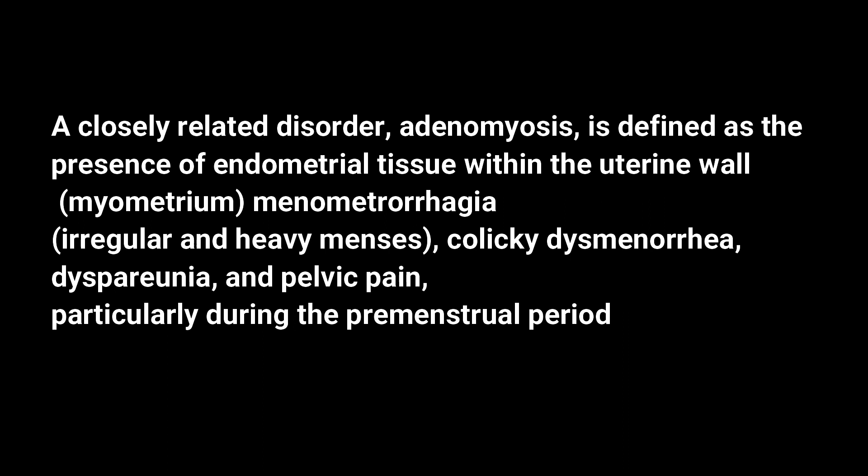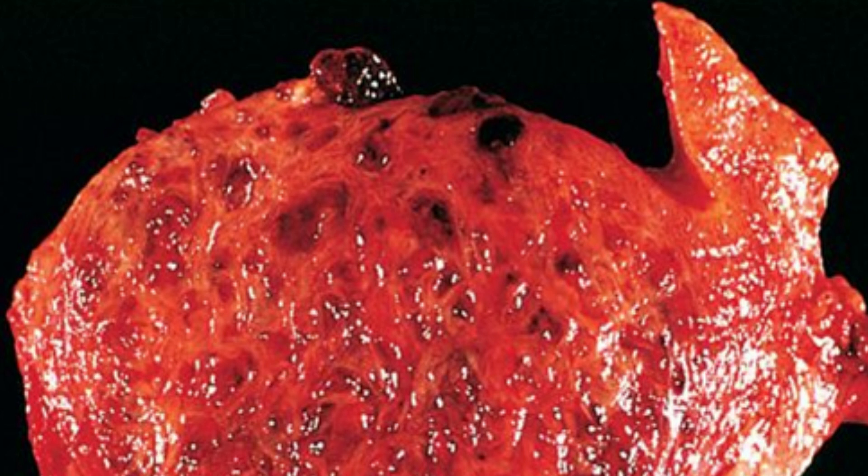Adenomyosis is the presence of endometrial tissue within the uterine wall. If endometrial tissue is contained within a leiomyoma, it is called an adenomyoma. When endometrial tissue is present within the wall of the uterus, symptoms include irregular and heavy menses, colicky pain during menses, pain during intercourse, and pelvic pain particularly during the premenstrual period. The accompanying photograph demonstrates adenomyosis.